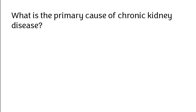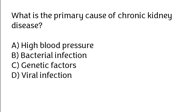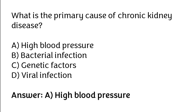What is the primary cause of chronic kidney disease? High blood pressure, bacterial infection, genetic factors, viral infection. The correct answer is option A: High blood pressure.